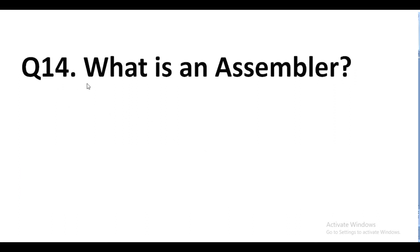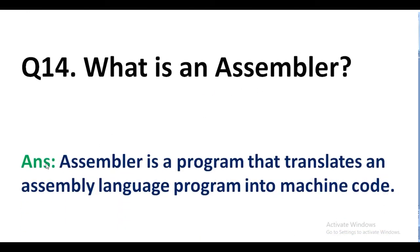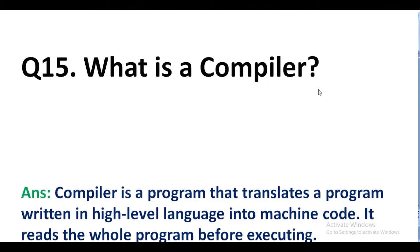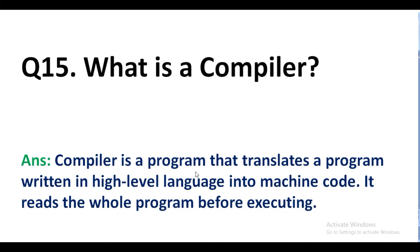Question number 14. What is an assembler? Answer. An assembler is a program that translates an assembly language program into machine code. Question number 15. What is a compiler? Answer. A compiler is a program that translates a program written in high-level language into machine code. It reads the whole program before executing.